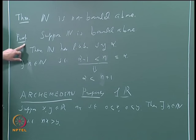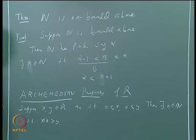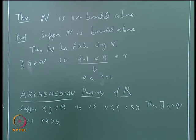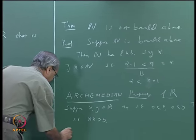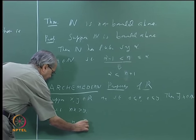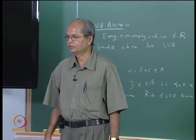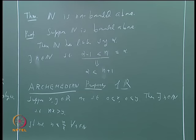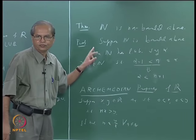This Archimedean property follows immediately from the fact that N is not bounded above. Suppose the property is false — then nx ≤ y for all n in N, which means n ≤ y/x for every n in N. But that would mean N is bounded above by y/x, which we have already shown is not possible. Therefore the Archimedean property holds.